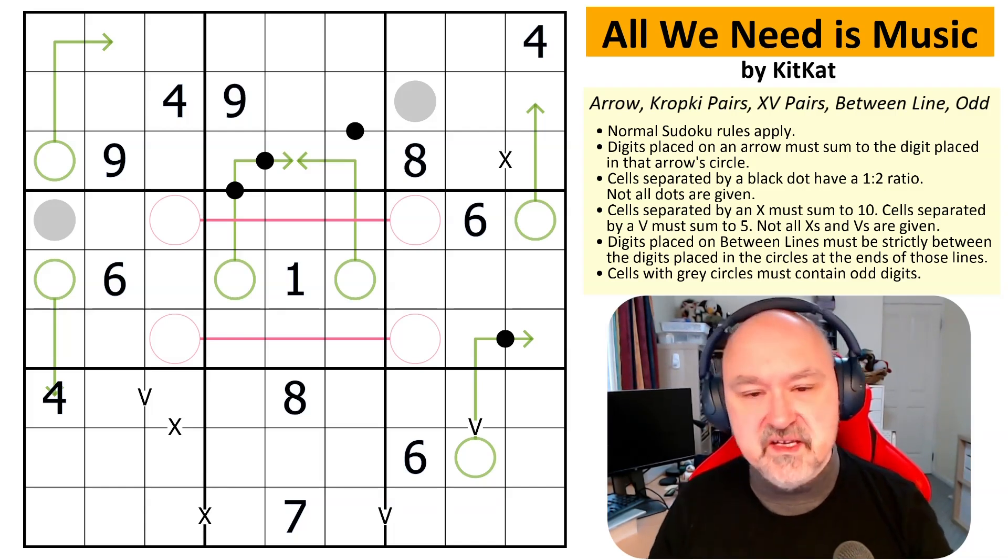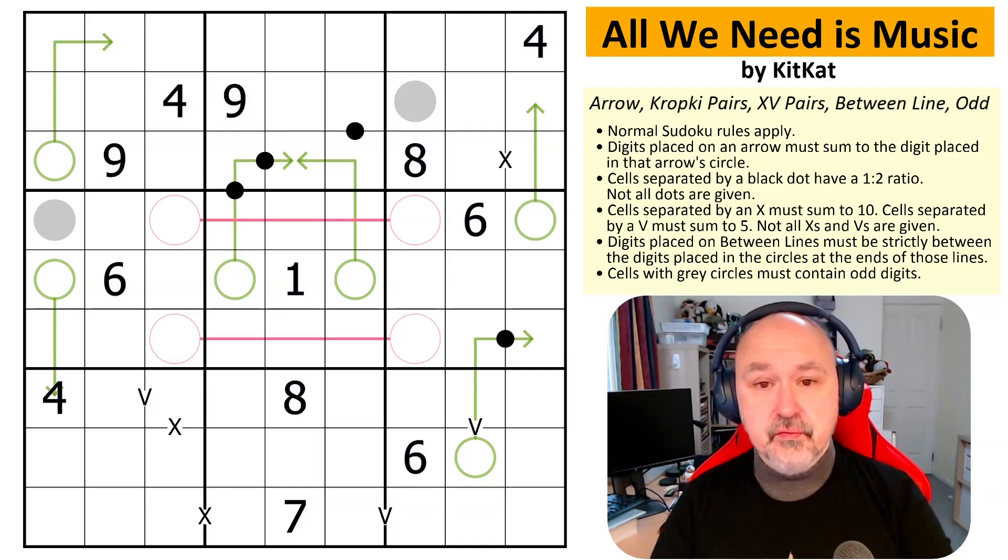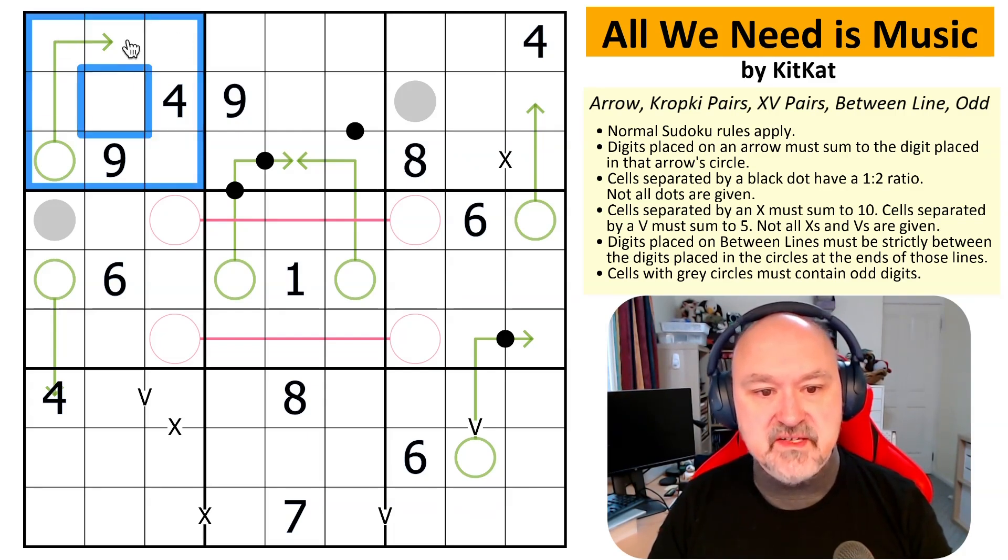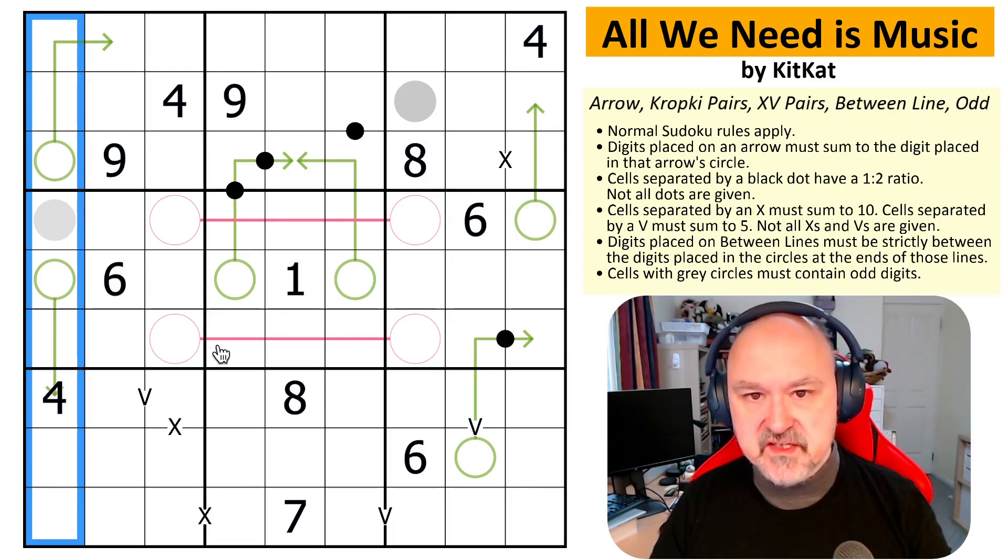Anyway, on to All We Need Is Music by KitKat. There are a few rules in play in this puzzle. I have no idea how hard it is, but first-time setters tend to make things a little bit easier because they're just playing around and trying to figure out what they can do. We'll find in every box, in every row and in every column the digits one to nine must be placed without repetition. Normal Sudoku rules apply.